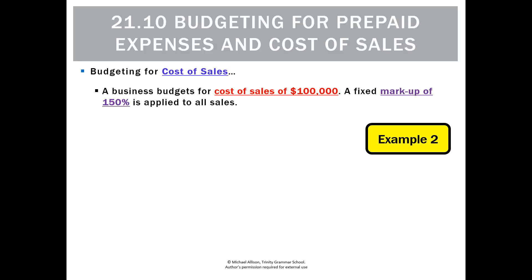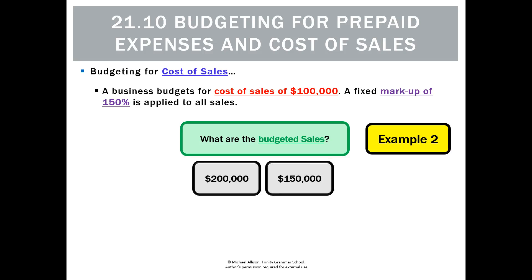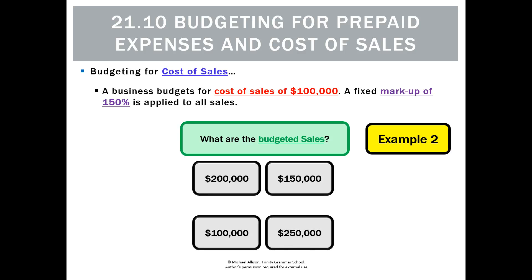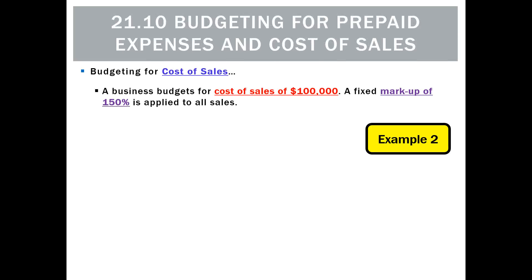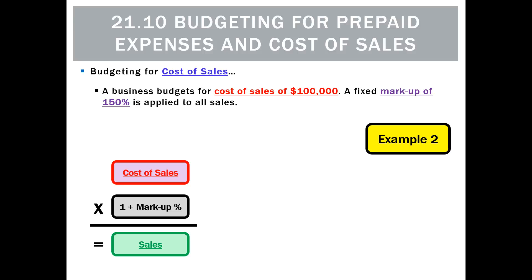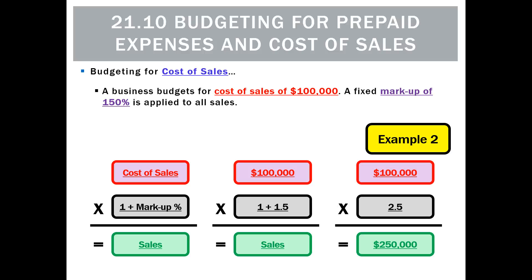What about if the question is asked slightly differently? It says cost of sales are $100,000 and this time we have a markup of 150%. What are the budgeted sales? Because we know our formula, we can't be tricked. The options are $200,000, $150,000, $100,000, or $250,000. $200,000 would be a markup of 100; $100,000 would be a markup of zero; $150,000 would be a markup of 50. The answer is $250,000, because 100,000 × (1 + 1.5) = 100,000 × 2.5 = $250,000.